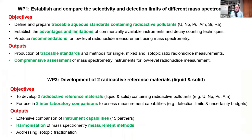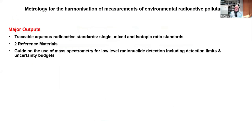We have structured our work in four scientific work packages supplemented by an impact work package and a management and coordination work package. Work packages one and three focus on radioactive pollutants; work packages two and four cover stable isotopes. Work packages one and two use the same kind of mass spectrometry systems; work packages three and four use the same seawater sample as raw material for reference materials. We will prepare traceable aqueous standards containing radioactive pollutants — uranium, neptunium, plutonium, americium, strontium, and radium — establish the advantages and limitations of commercially available instruments in decay counting techniques, produce recommendations for low-level radionuclide measurements using mass spectrometry, and produce two radioactive reference materials (liquid and solid) for laboratory comparisons.